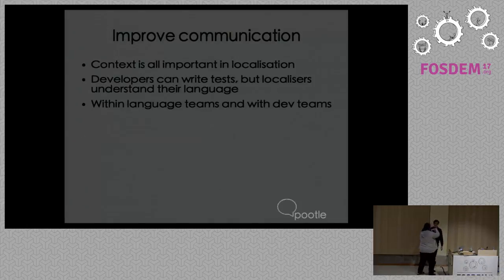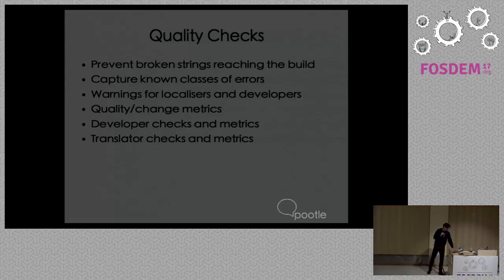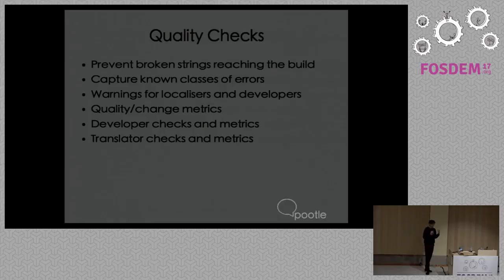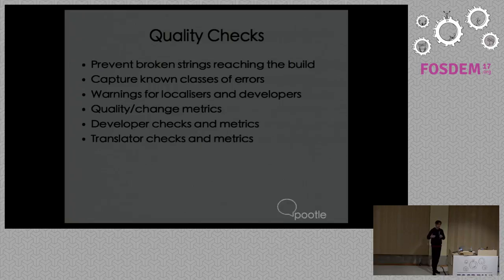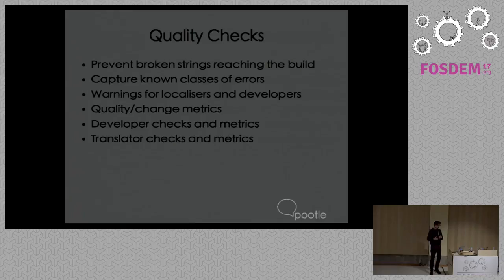Within localization we have quality checks, and as Dwayne mentioned, the Translate Toolkit provides many such checks. The ultimate aim is to prevent strings ever reaching the build process so they don't break builds. But with continuous integration it's not just about fixing bugs — it's about stepping back and saying what was the cause of that bug, putting in place the process to prevent it, and then taking a further step back to ask what causes that class of bugs and how can we prevent that class from happening.